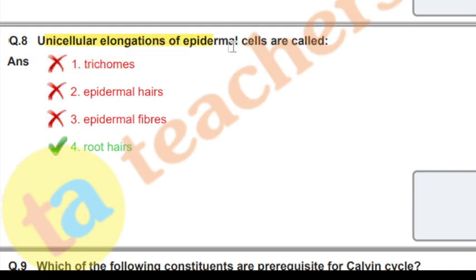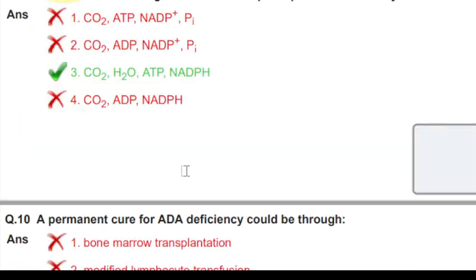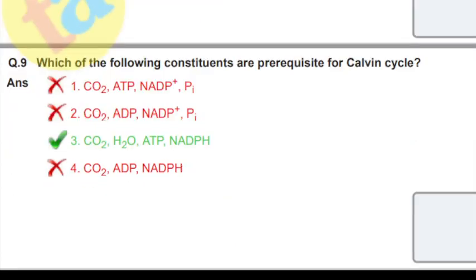Next question: which of the following constituents are precursors for Calvin cycle? The Calvin cycle requires CO2, H2O, ATP, and NADPH. These are the right answers.